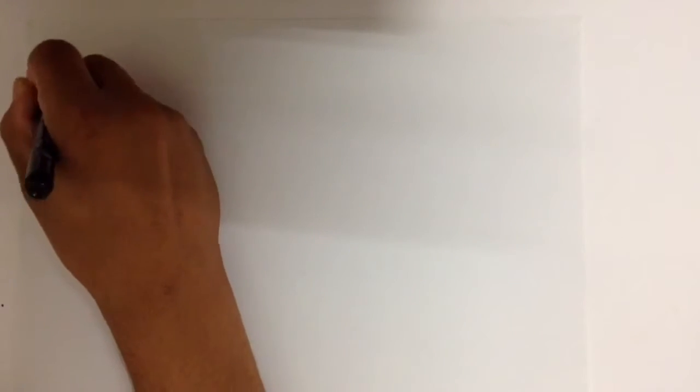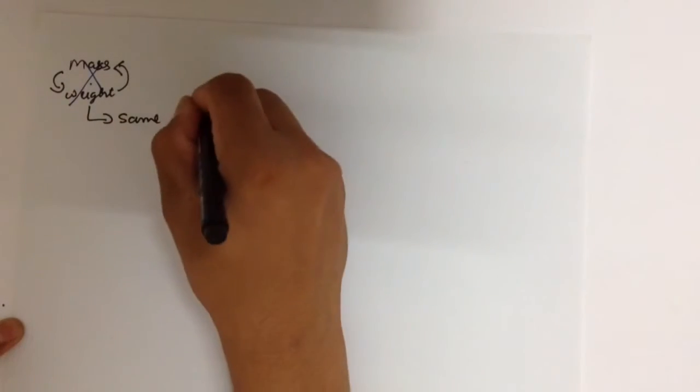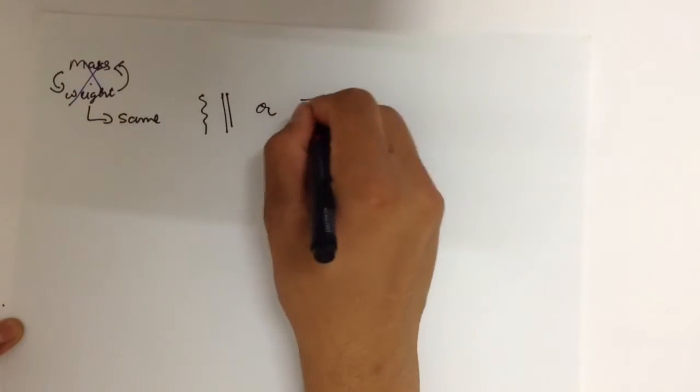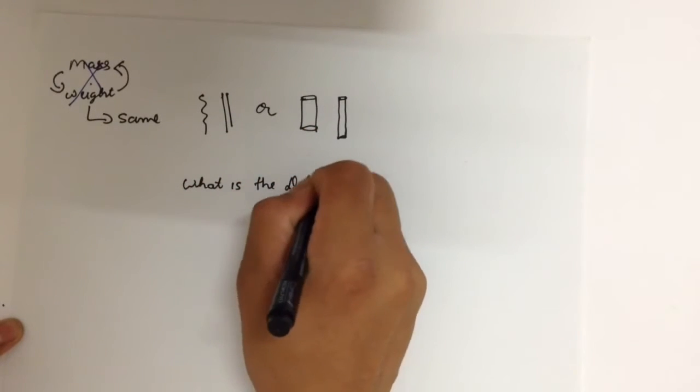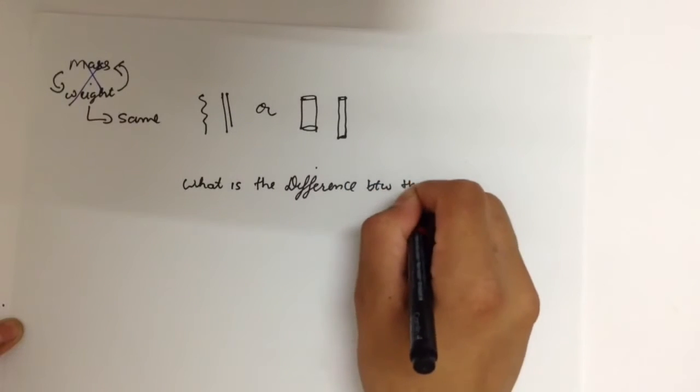We often use the word mass and weight interchangeably, but that's wrong. It would be same as comparing noodles with spaghetti or pasta with macaroni. But we know that they are very different from each other. So what is the difference between mass and weight?